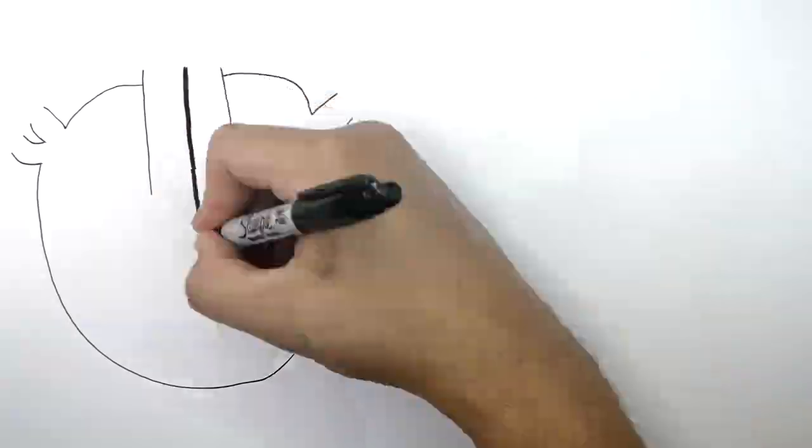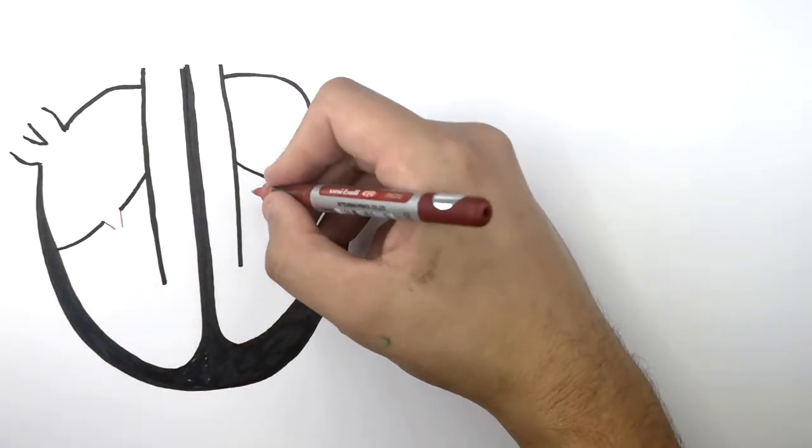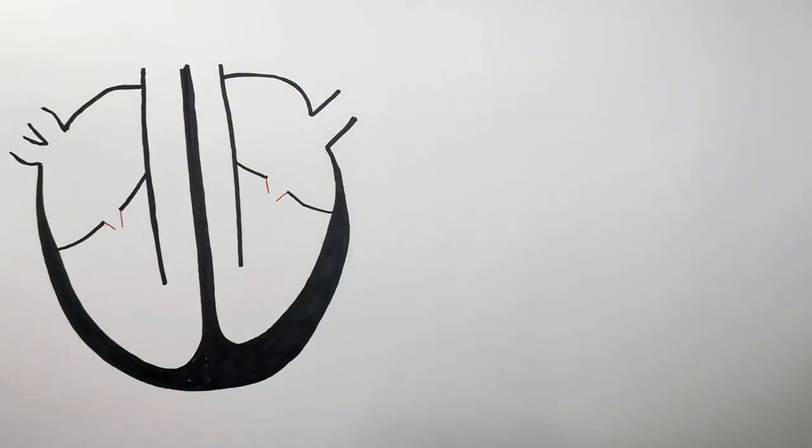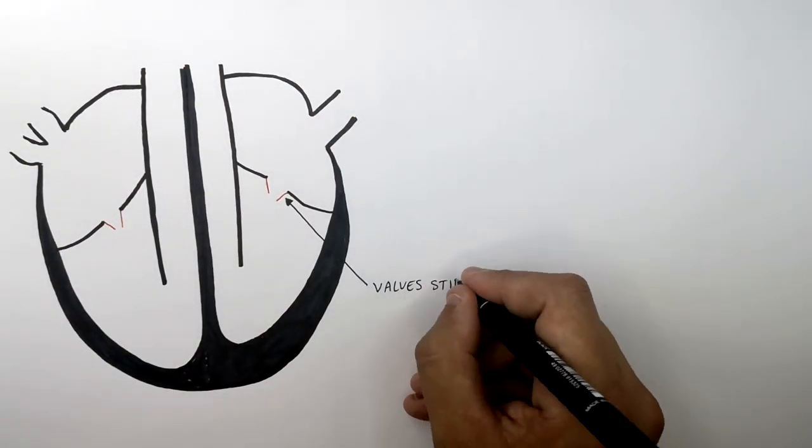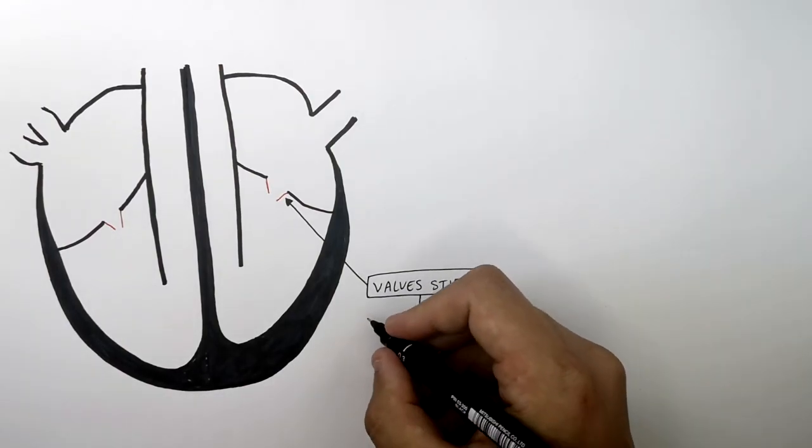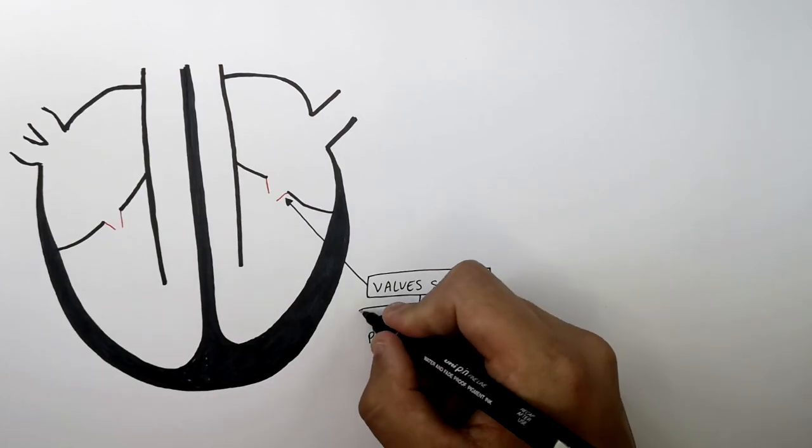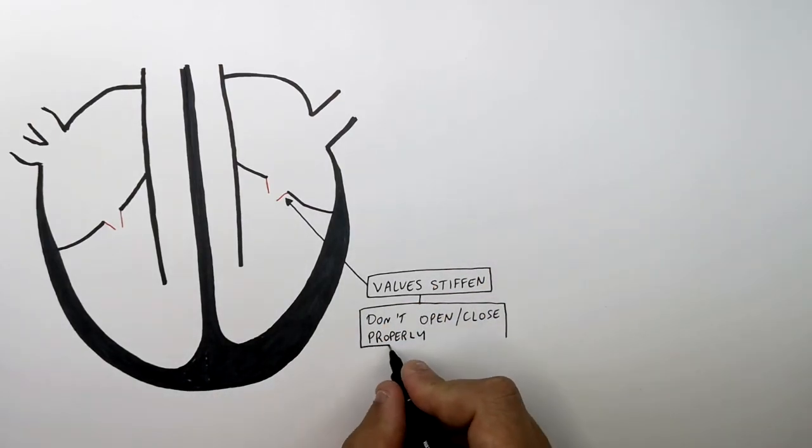What I'm drawing here is a human heart. And this person, their valves in their heart have stiffened. Their valves in their heart have stiffened. So when the valves stiffen, they don't open and close properly. So when someone's valves stiffen, they don't open and close properly.